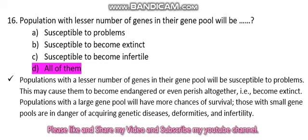A population with a lesser number of genes in their gene pool will be — [blank]. The options are: susceptible to problems, susceptible to become extinct, susceptible to become infertile, or all of them.